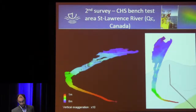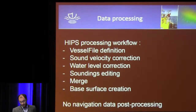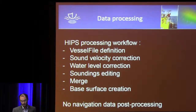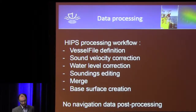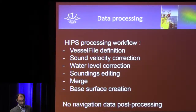Here are the results obtained from survey two. Again, ten times vertical exaggeration on the left and a plan view on the right. Data processing was classical — we used HIPS and SIPS, and I would like to thank Caris for the license loan. We performed sound velocity definition, velocity correction using CTD casts at each site, water level correction, sounding editing, merging, and base surface creation. Importantly, no navigation data post-processing was done, which explains some bias we will see later.